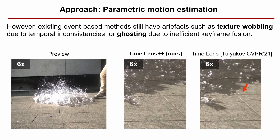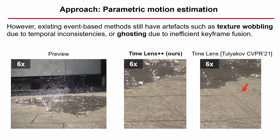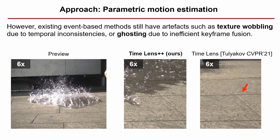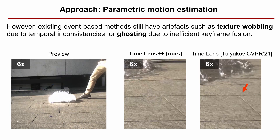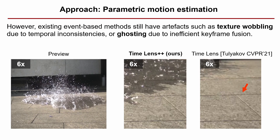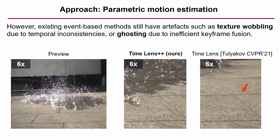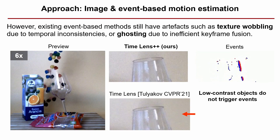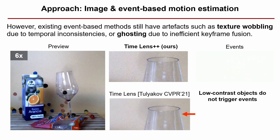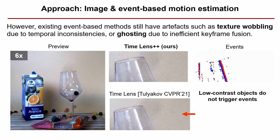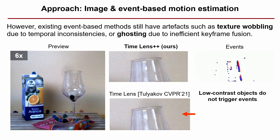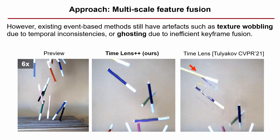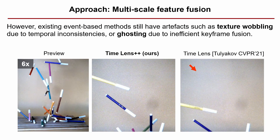However, existing event-based methods still suffer from artifacts, such as texture wobble caused by temporal inconsistencies, inaccurate flow in the absence of events, or ghosting due to inefficient keyframe fusion.